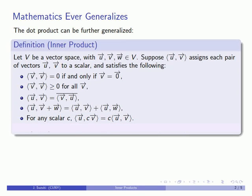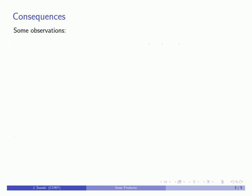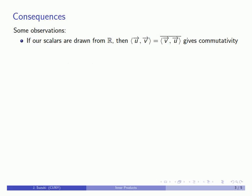And if we have our inner product together with our vector space, we can call the vector space an inner product space. We'll make a couple of quick observations on this definition. First of all, if our scalars are drawn from the set of real numbers, then the inner product of u and v being the conjugate of the inner product of v and u gives us commutativity. Don't believe me? You should prove it.